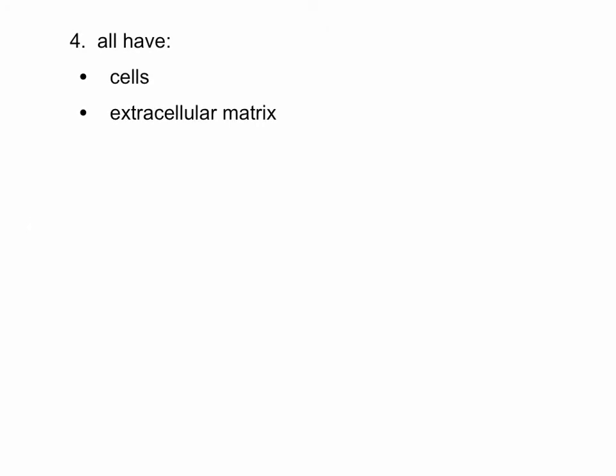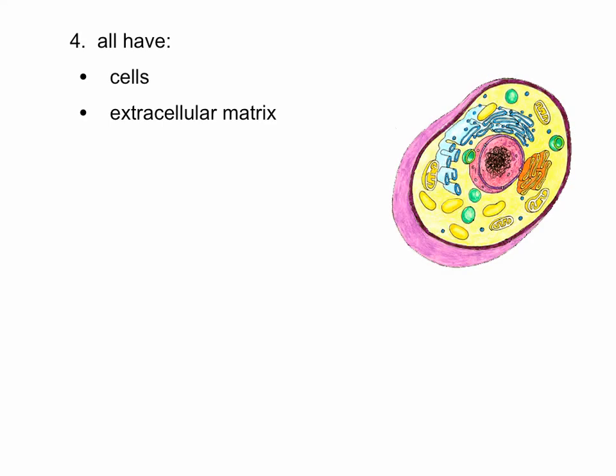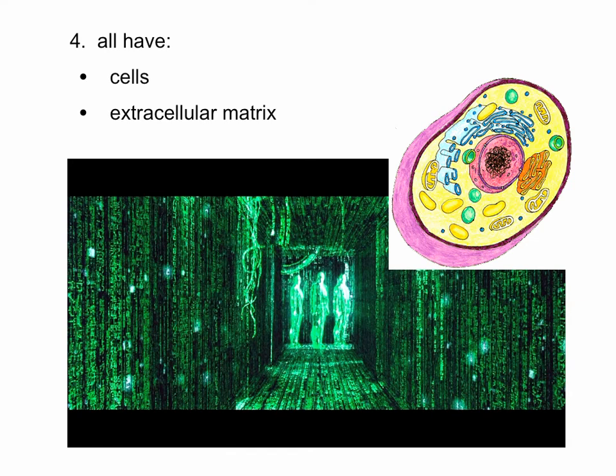All connective tissues have two common characteristics, which was part of the textbook reading notes. Most people got the extracellular matrix part, but a lot of people left out the cells. So they all have cells, and they all have an extracellular matrix. We'll talk about each of those in more detail as we go further.